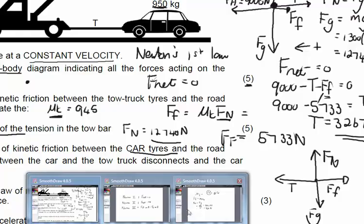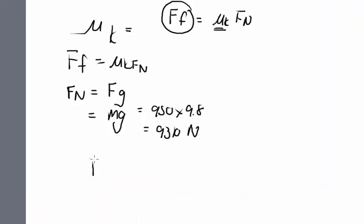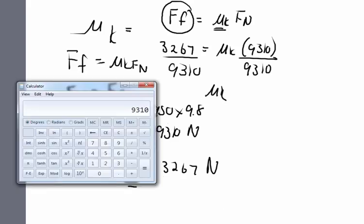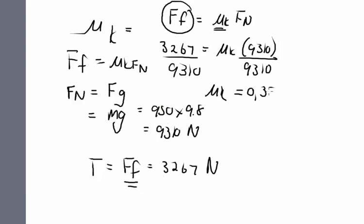We can say that the force of tension is going to be equal to the force of friction for the car, which we said was 3,267 newton. So, now I can substitute this value into my formula. 3,267 is equal to mu_K times 9,310. To get rid of the 9,310, I divide by it on both sides. And if I use my calculator, 3,267 divided by 9,310 gives me 0.35. Remember, no unit. It's important to remember that the kinetic coefficient of friction is not the same necessarily for all tires on the surface.